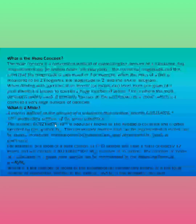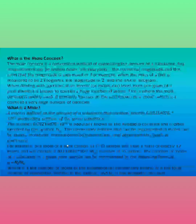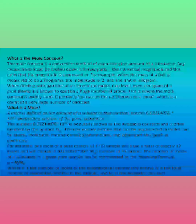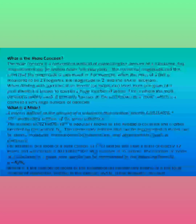The number we round off to 6.022 × 10²³ is called Avogadro's number or Avogadro's constant, and it is usually denoted by Nₐ. For example, one mole of an atomic substance contains 6.022 × 10²³ atoms, and one mole of a molecular substance contains 6.022 × 10²³ molecules.